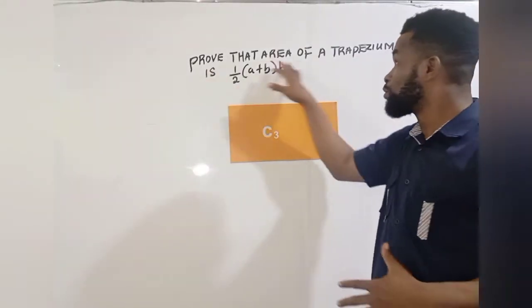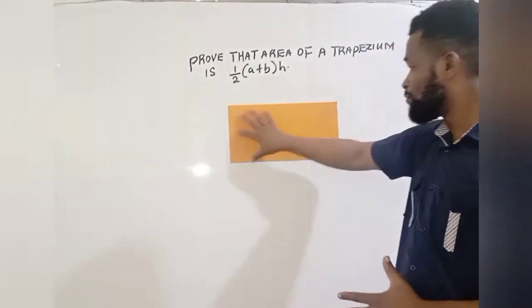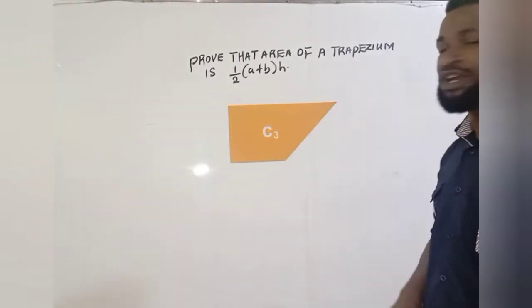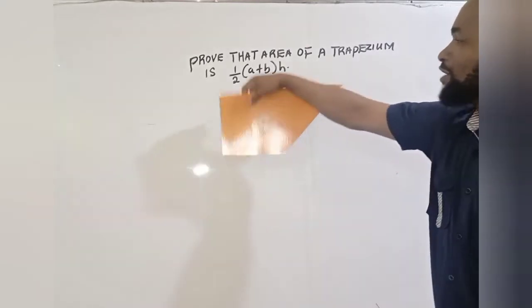If you look at this, this is a rectangle. If I take one side away, it becomes a trapezoid.